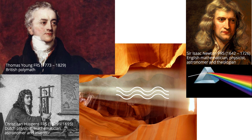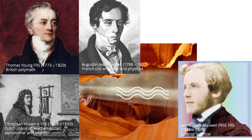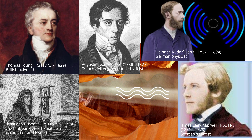Further contributions were made by many other researchers, among them was Augustine Jean Fresnel, who showed that light is a transverse wave. Furthermore, the mathematical theory of electromagnetism by James Clerk Maxwell, set up in 1864, led to the view that light is of electromagnetic nature, propagating as a wave from the source to the receiver. While Heinrich Hertz discovered experimentally the existence of electromagnetic waves at radio frequencies in the 1880s.